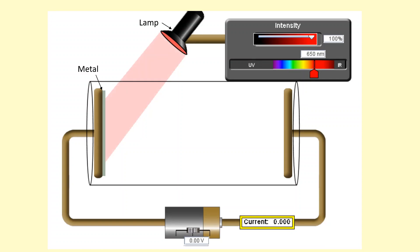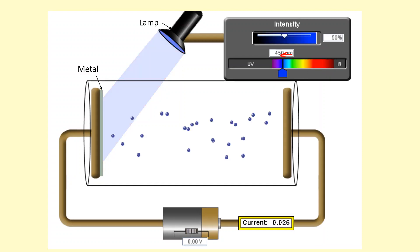With red light nothing really happens. Even if I increase the intensity or brightness of the red light, nothing happens. That's because each photon of red light has a wavelength that's too long and doesn't have enough energy to cause anything to happen. But as I lower the wavelength, increasing the frequency, the energies of each photon increase.